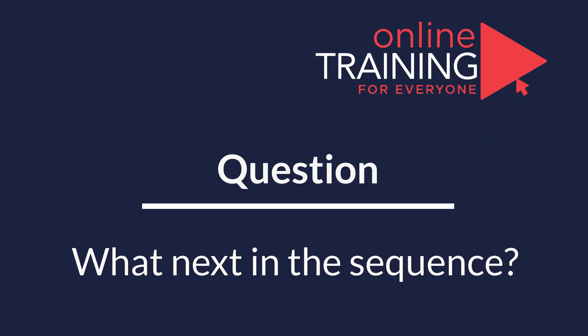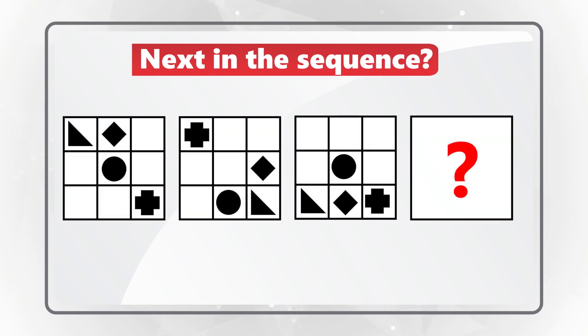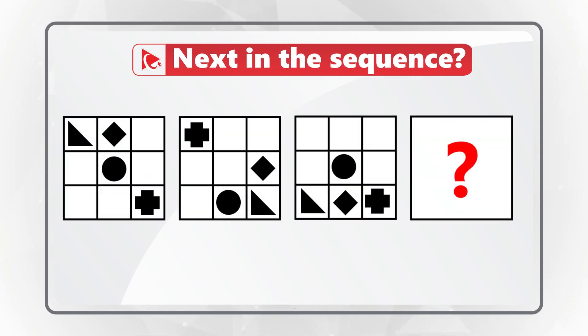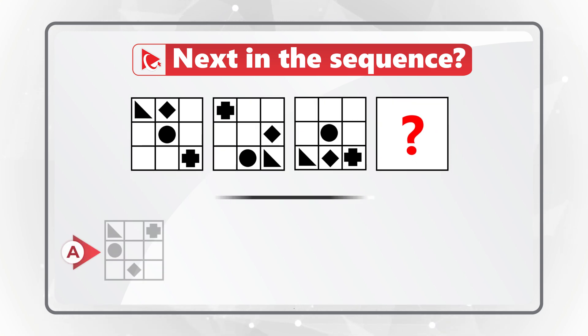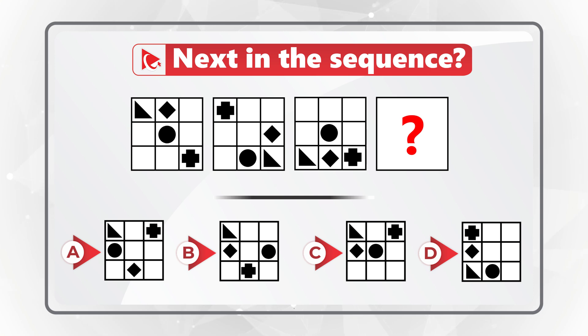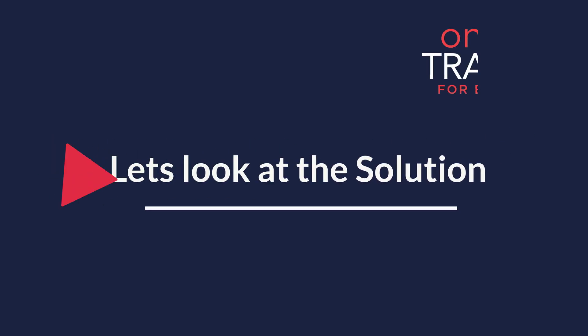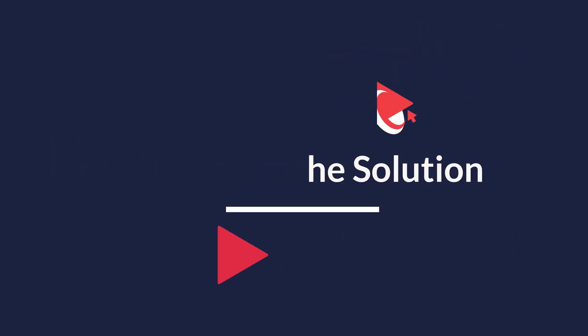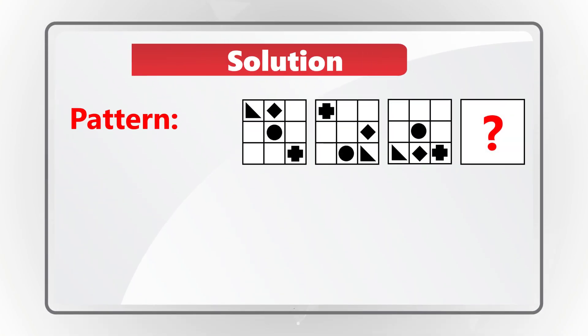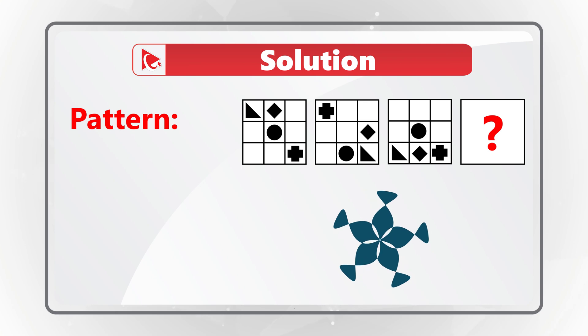Here's an amazing question to test your pattern recognition skills. You need to determine which shape comes next in the sequence. You're presented with three 3×3 square boxes, each containing small shapes, and the fourth shape in the sequence is missing. Choose from options A, B, C, or D. To solve this, you need to identify one or two patterns.